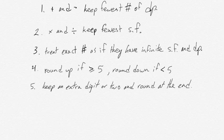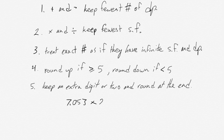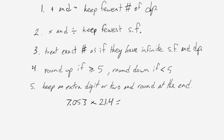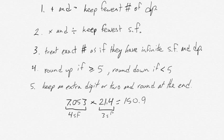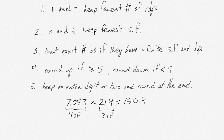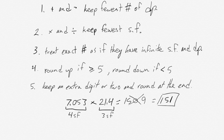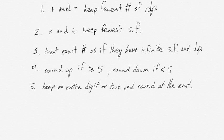We can also do calculations involving multiplying or dividing. We have 7.053 multiplied by 21.4, which equals 150.9. This number has 4 sig figs. But when we count the total number of significant figures in our starting values, 4 sig figs and 3 sig figs. So our final answer should only have 3 significant figures. We have to round, and our final digit is greater than 5, so we round up to 151. Again, you don't need to show that intermediate step.